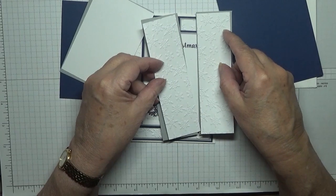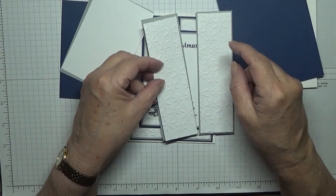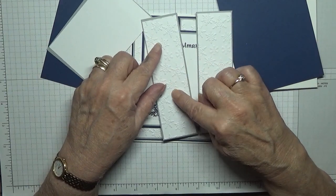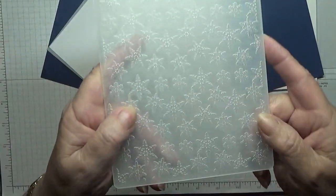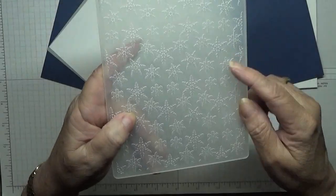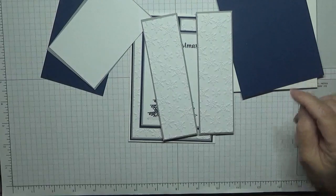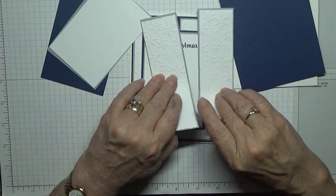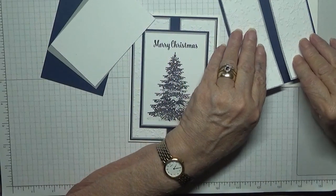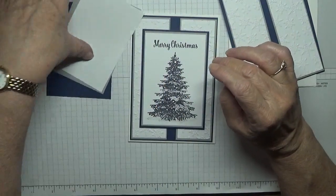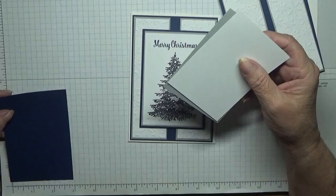I have already embossed these with, I think you've seen it before, this embossing folder full of snowflakes. It's a generic one, there is no name on it, means I've had it for years, and they will sit on top of the blue. Now I've also got, let's get the first one sorted, three inches.